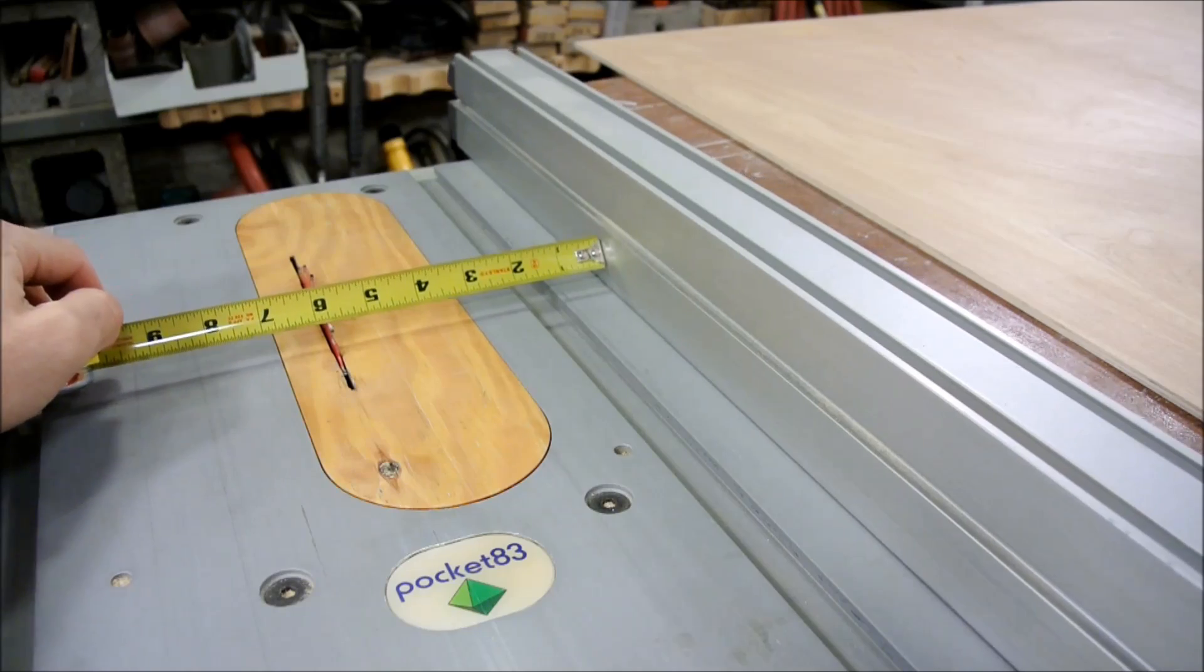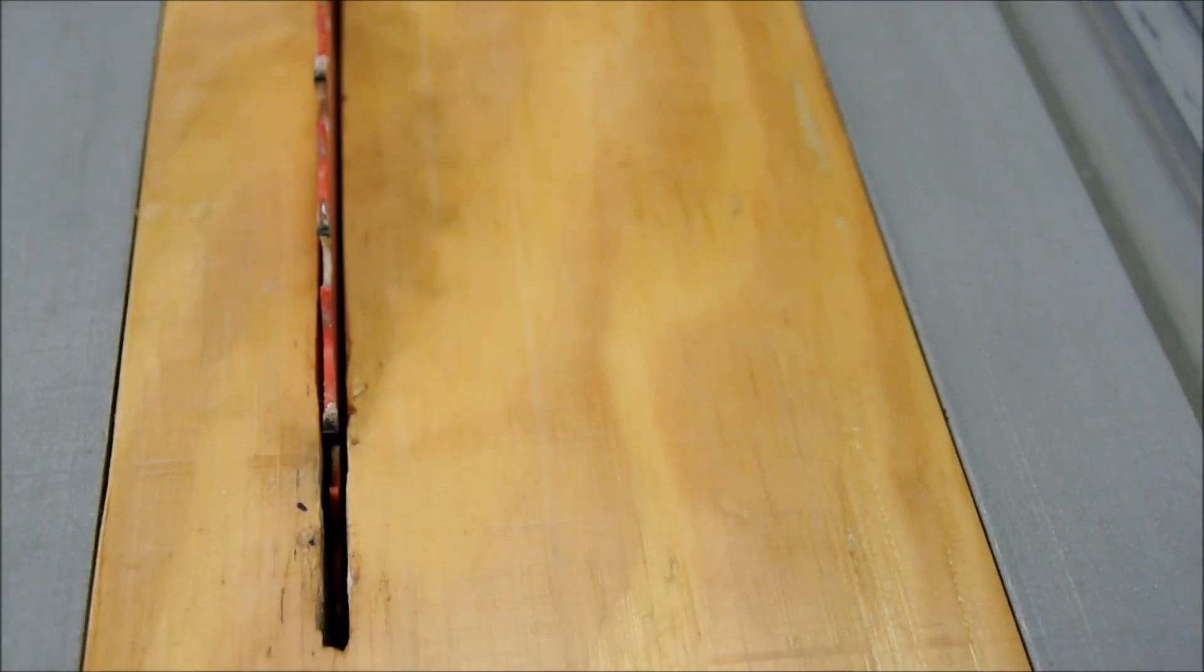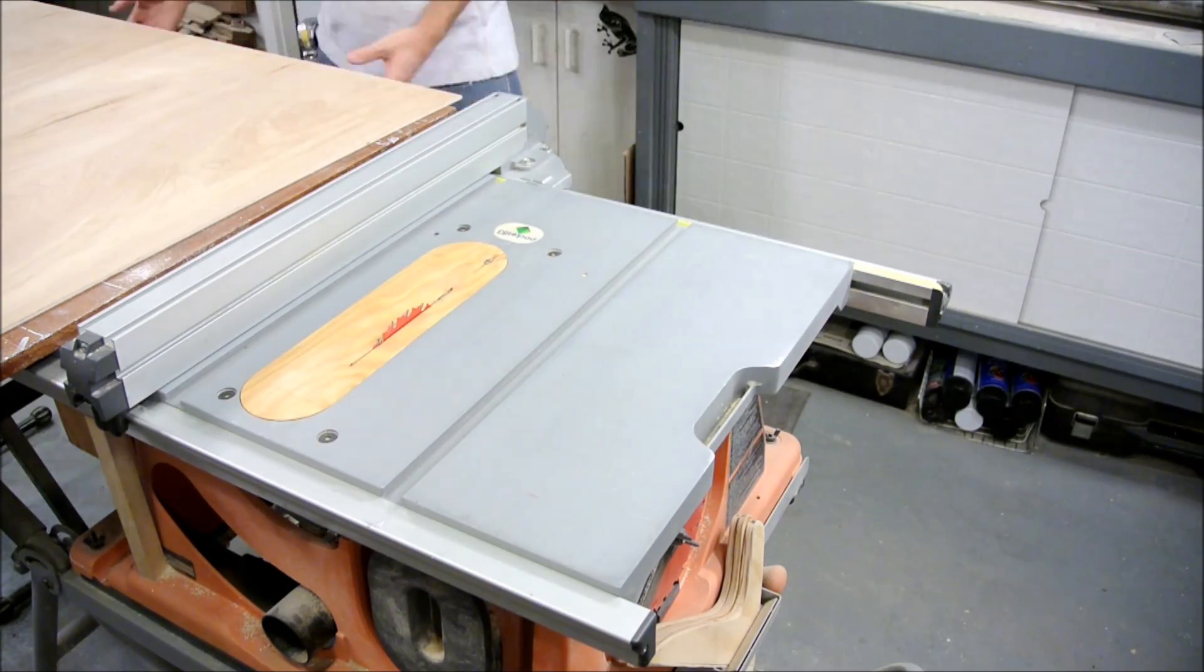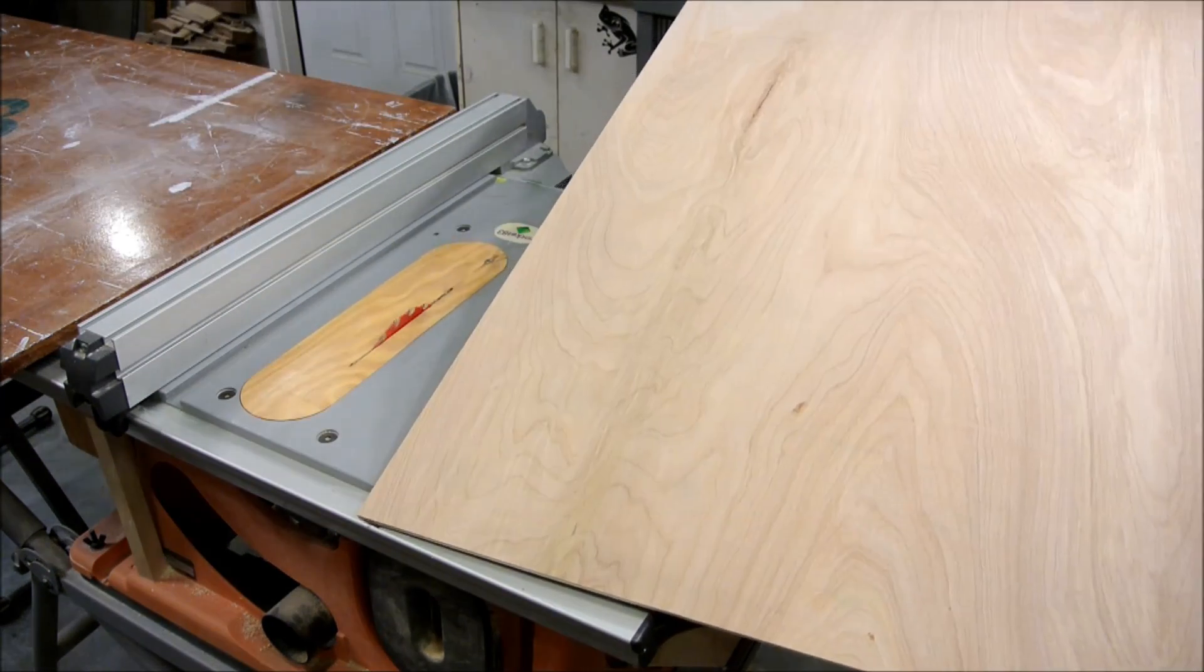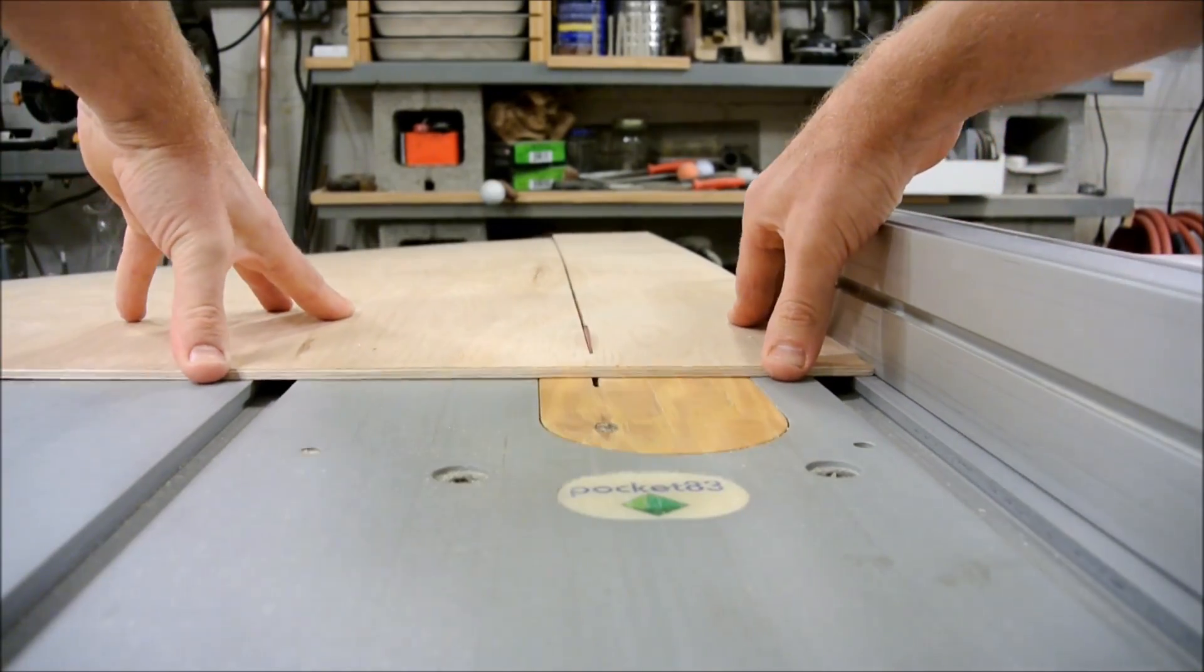I already know that the width dimension for my golden rectangles is going to be 5 inches, so that can be ripped right away if you have a table saw. But like I said, you don't have to have one to build this project.